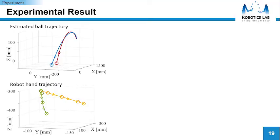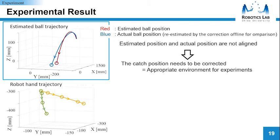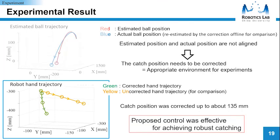These shows experimental results. In the above figure, red line shows the estimated ball trajectory with lowered accuracy. And the blue line shows the actual ball trajectory that we estimated offline from comparison after the experiment. In this graph, the estimated ball trajectory and actual ball trajectory are not aligned. This means that the experimental environment was suitable for verification of the catching position correction. In the below graph, green line shows the corrected robot hand trajectory and yellow line shows uncorrected trajectory. In the experiment, the catch position was corrected up to about 135mm. This means the proposed correction by the multi-vision hand was effective for achieving robust catching.